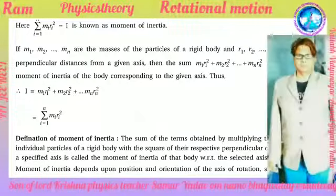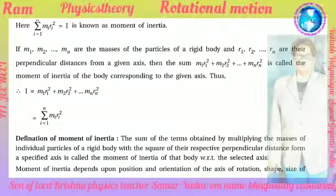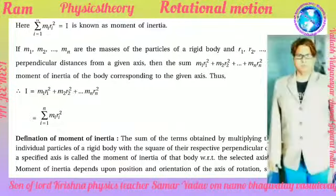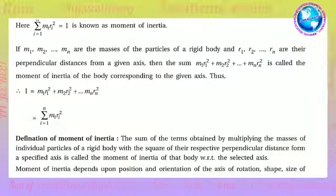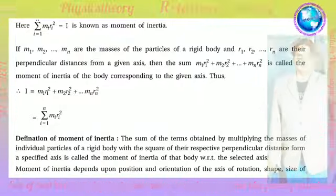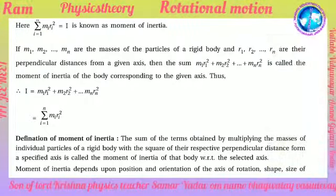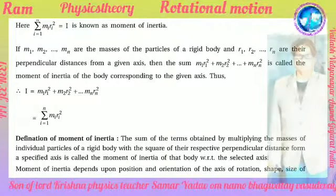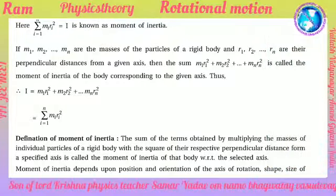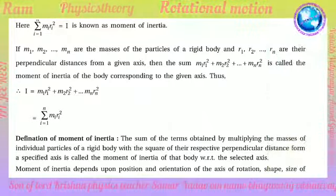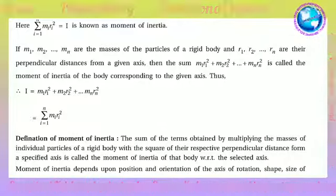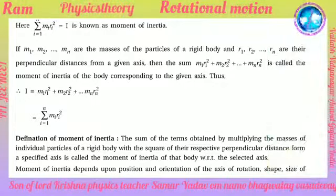If m1, m2, ... mn are the masses of the particles of the rigid body and r1, r2, ... rn are their perpendicular distances from a given axis, then the sum m1r1^2 + m2r2^2 + ... + mn*rn^2 is called the moment of inertia of a body corresponding to the given axis. Thus I = m1r1^2 + m2r2^2 + ... + mn*rn^2 = summation(i=1 to n) mi ri^2.